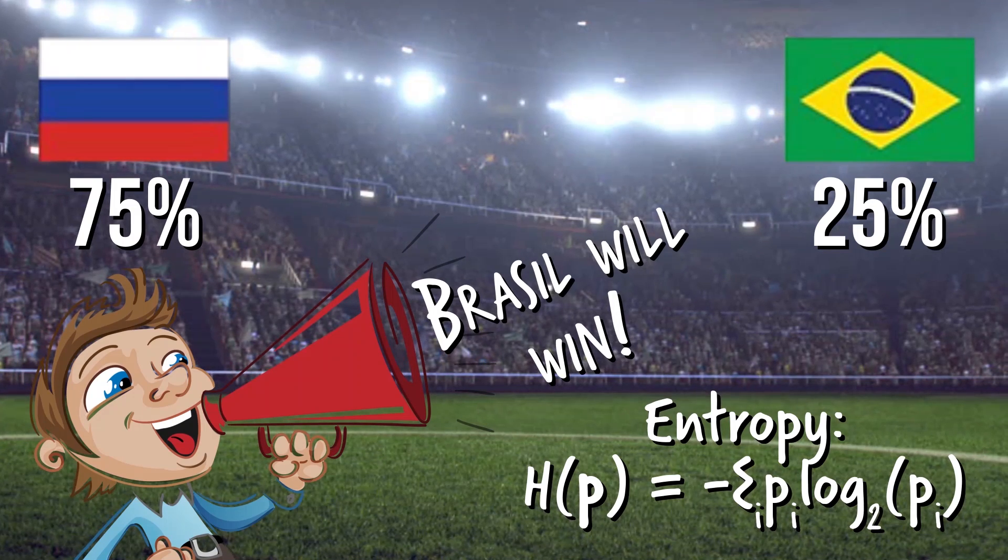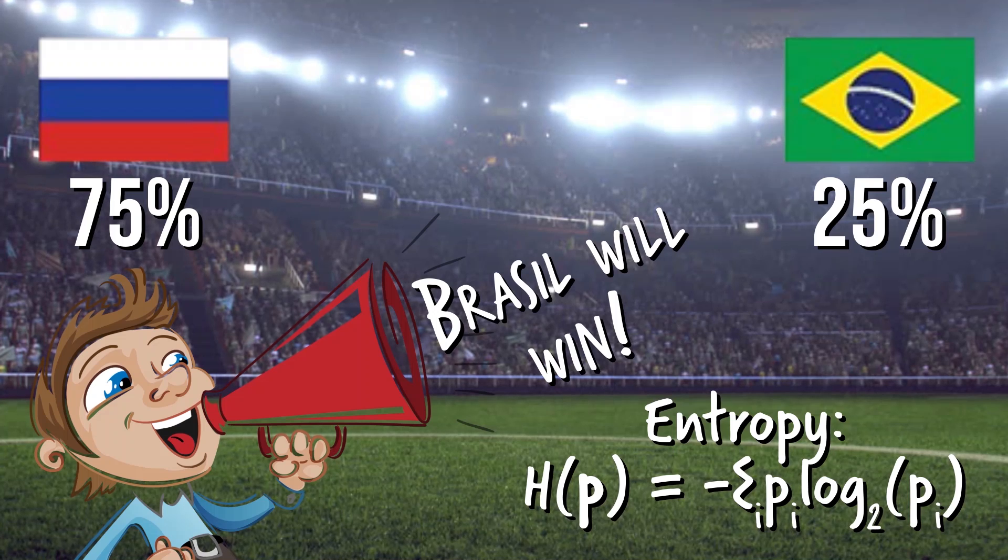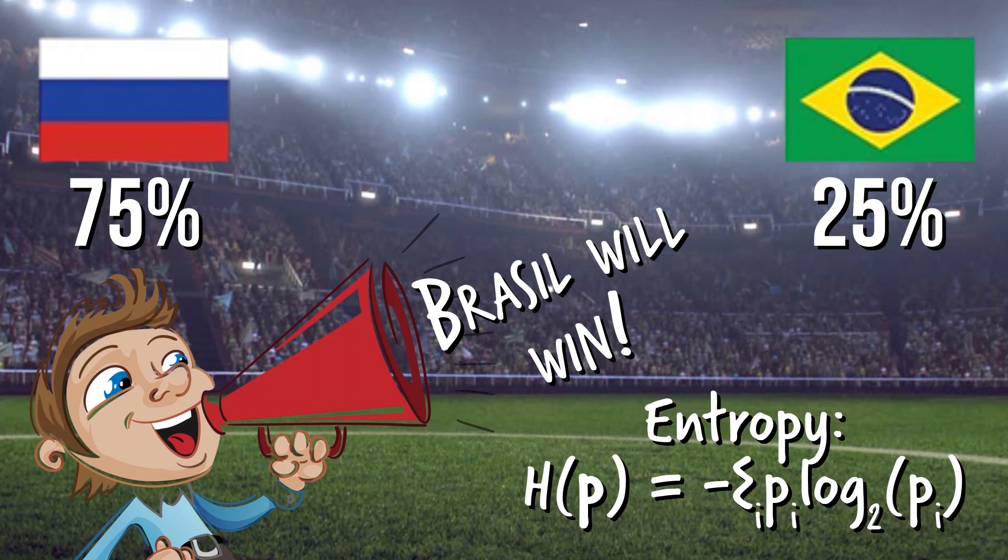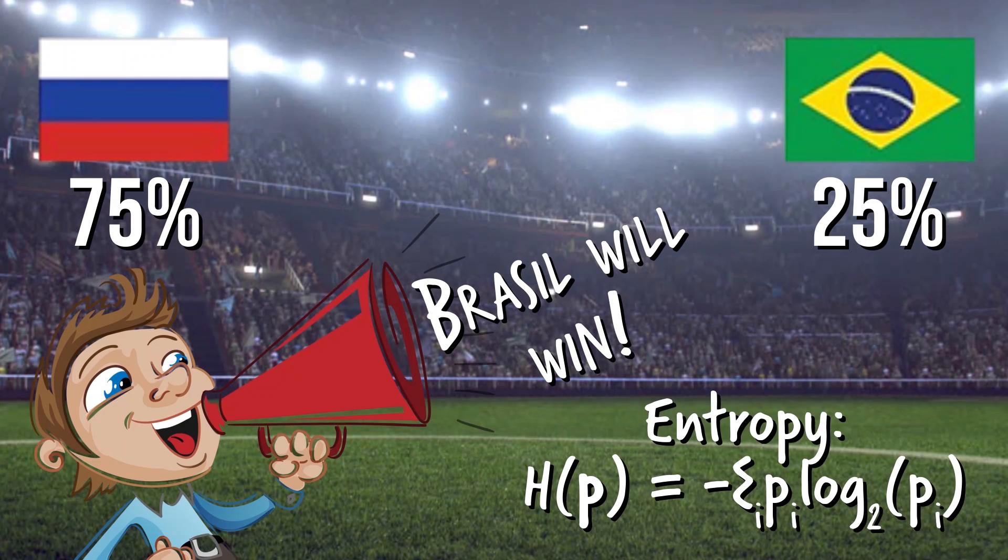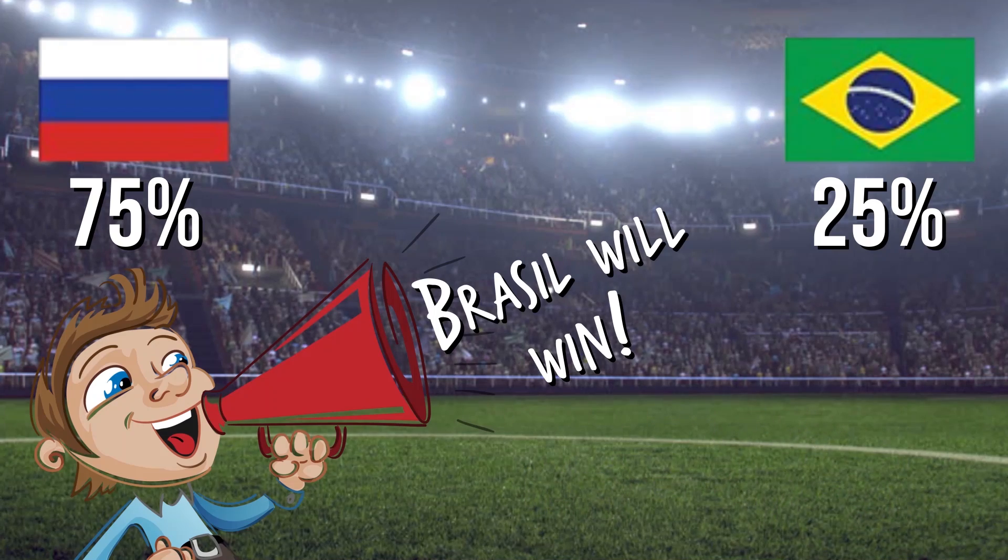It measures the average amount of information that we get from one sample drawn from a given probability distribution p. It tells us how unpredictable that probability distribution is. The more variation in the data, the larger the entropy.